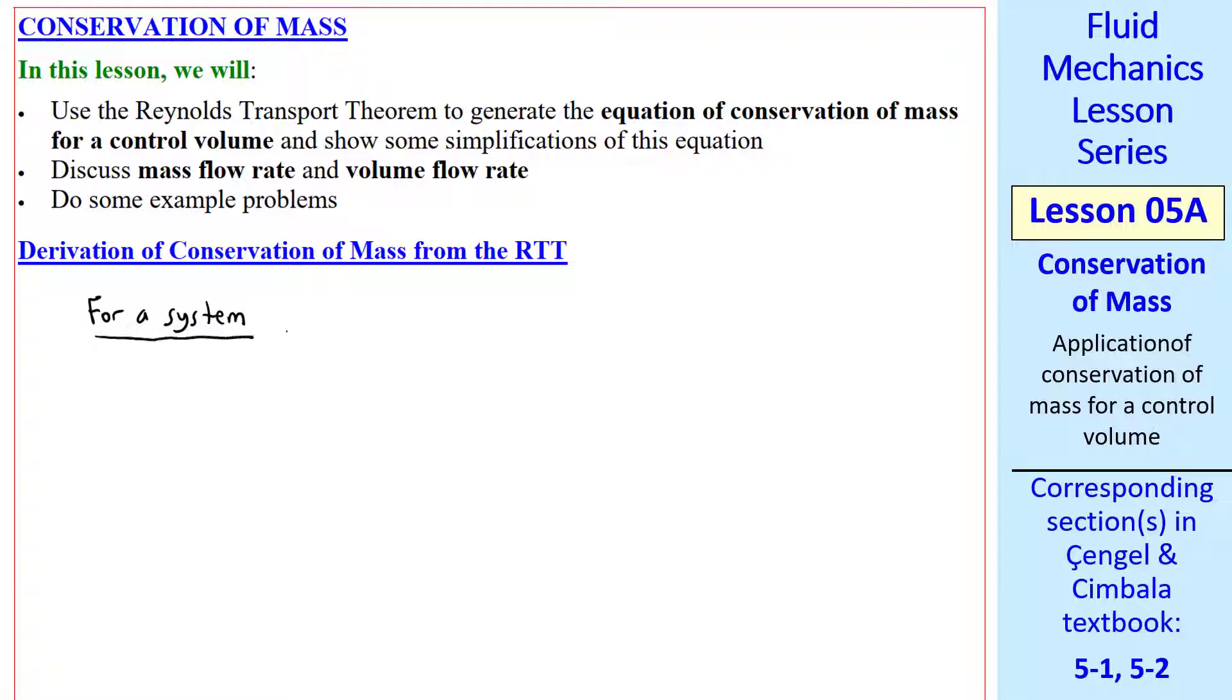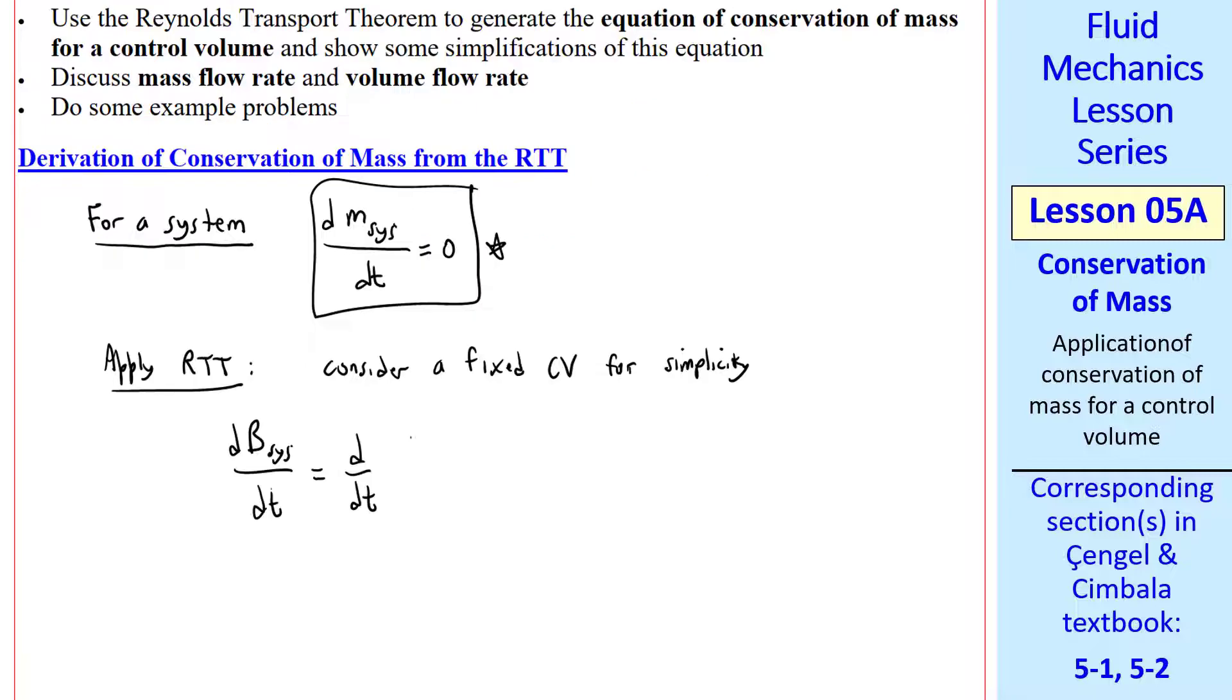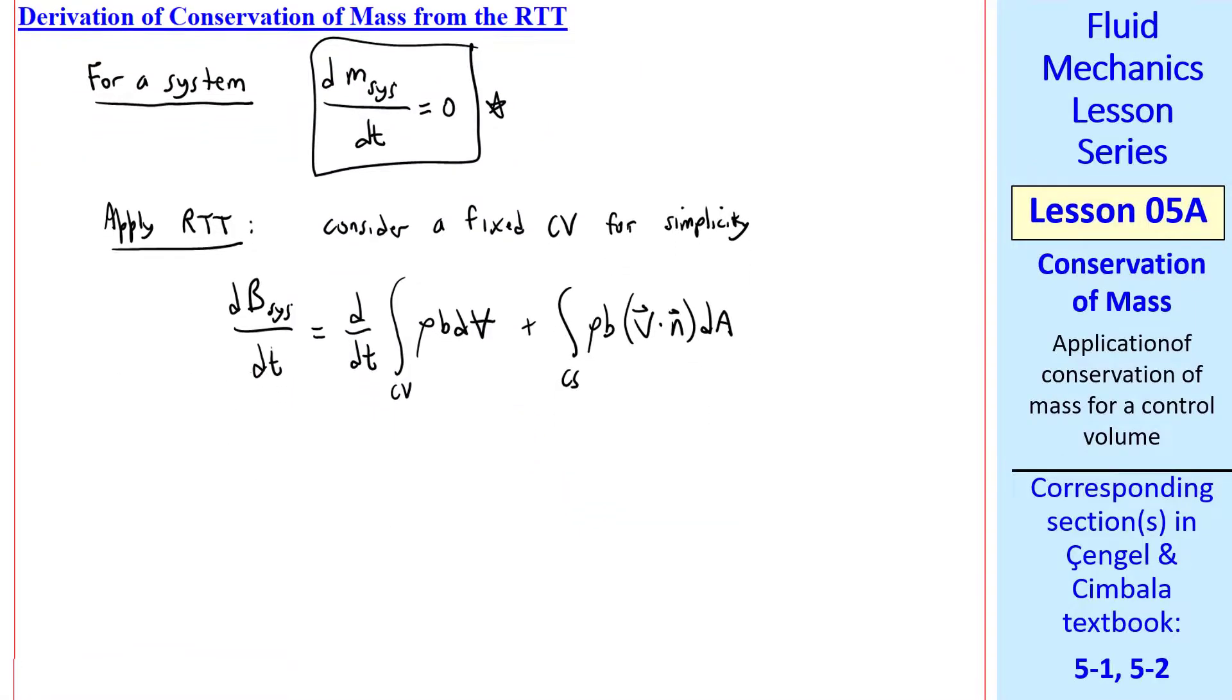Conservation of mass for a system is dm system dt equals zero. Mass of a system has to stay constant since by definition mass does not enter or leave a system. Let's apply the RTT from the previous lesson, considering a fixed control volume for simplicity. For conservation of mass, we'll let capital B be the mass itself, and then little b is 1.